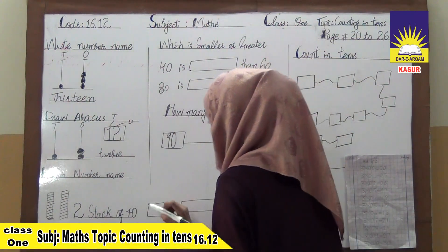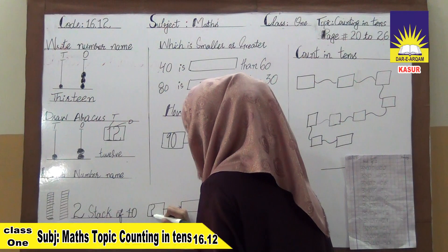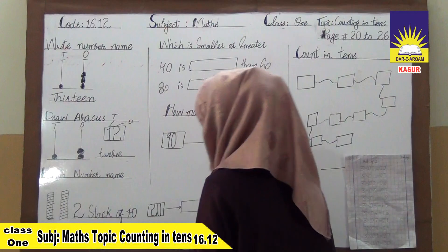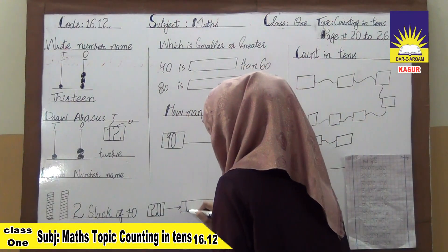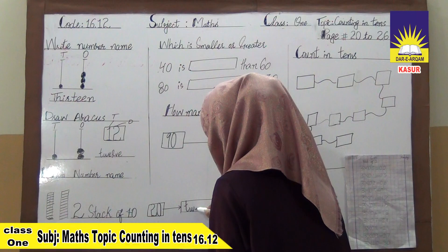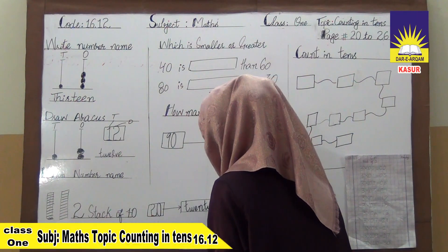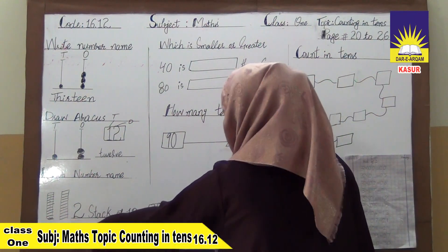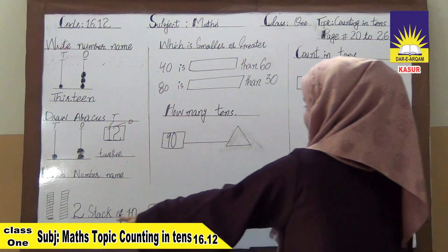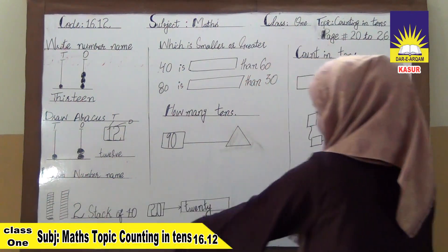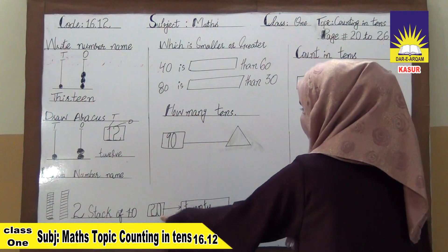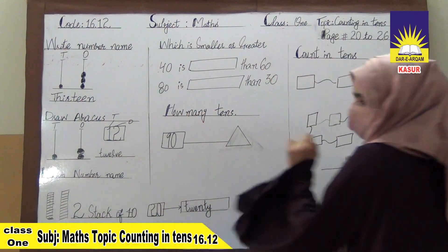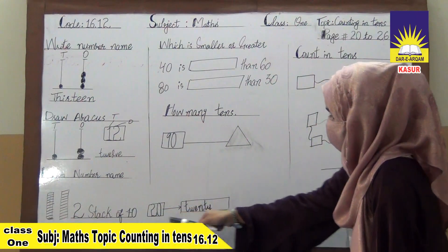Here we have two, because we have two shapes. And tens means we have zero in the ones place. So this is 20. Now let's write it in number name. So we have two boxes here. This way we will complete our entire page.